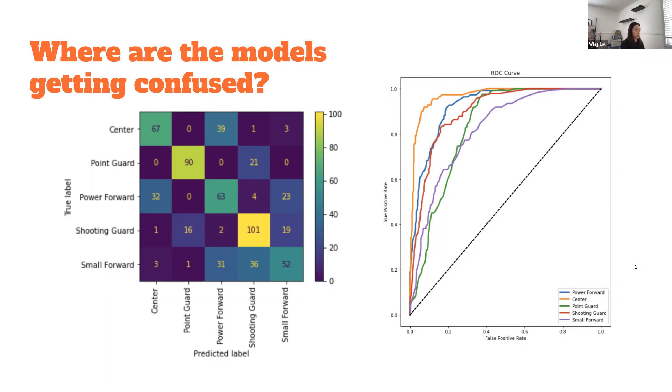Looking at the confusion matrix, you can see centers are being confused with power forwards, and shooting guards are being confused with small forwards. Really, the bigger players being confused with each other and the smaller players being confused with each other.